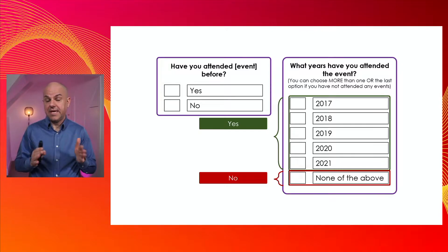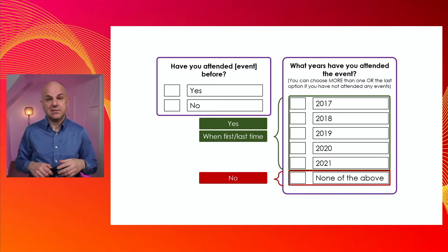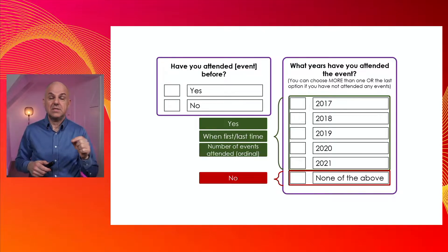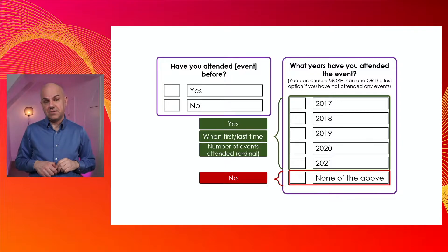So we still get the same yes-no that we had in the first question, but we can obtain two additional bits of information. The first refers to when they first and last attended. For example, if someone ticked 2017, 2019, and 2021, we have the information that they attended 2017 as the first time and 2021 as the last time. We can also find out how many events they attended — in this example, we could record that they had attended three events before.